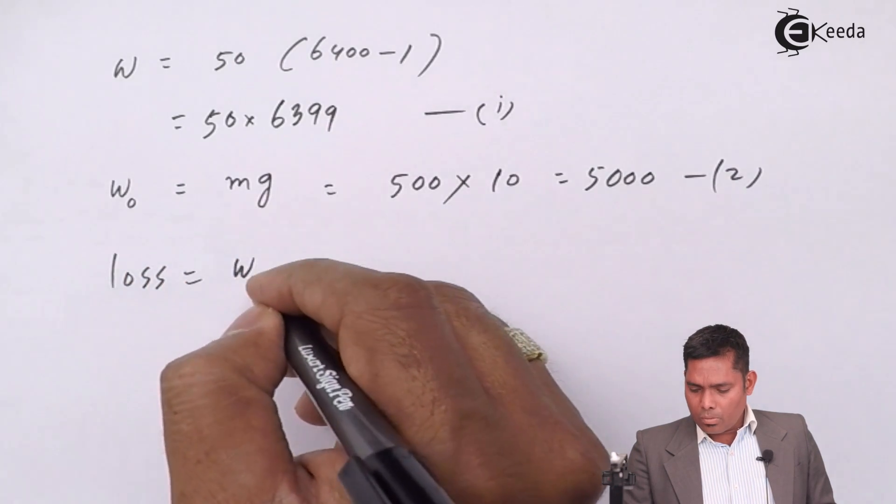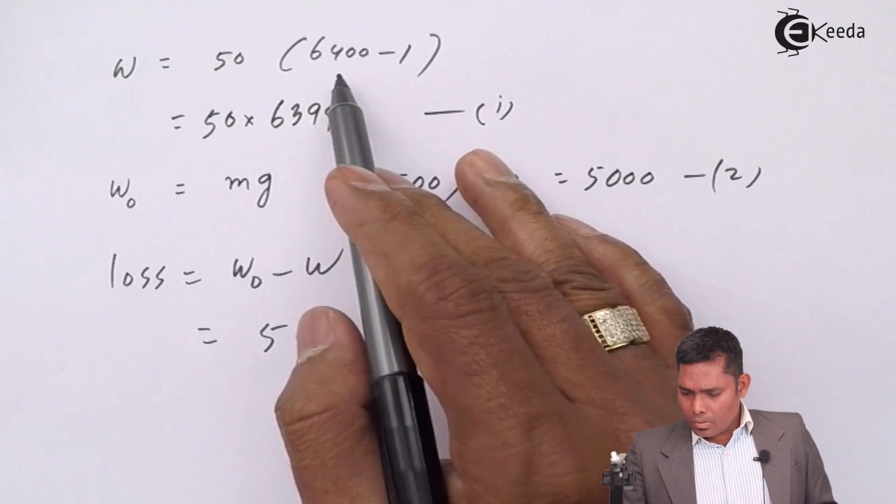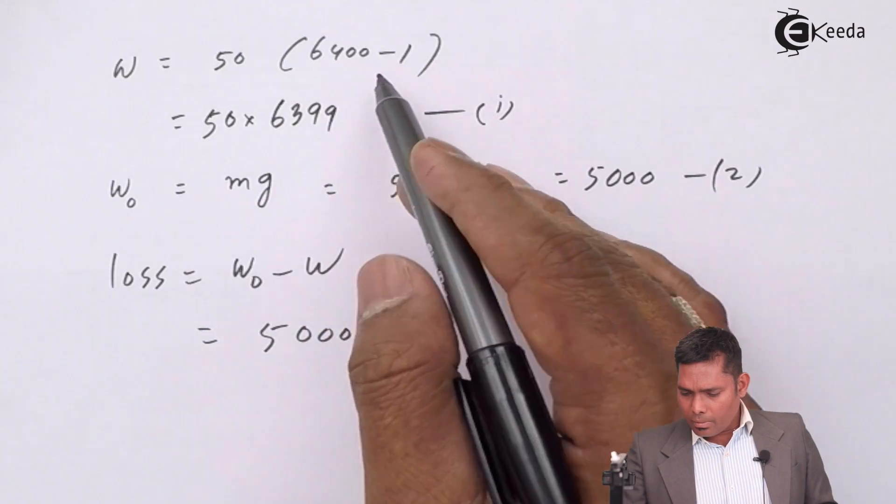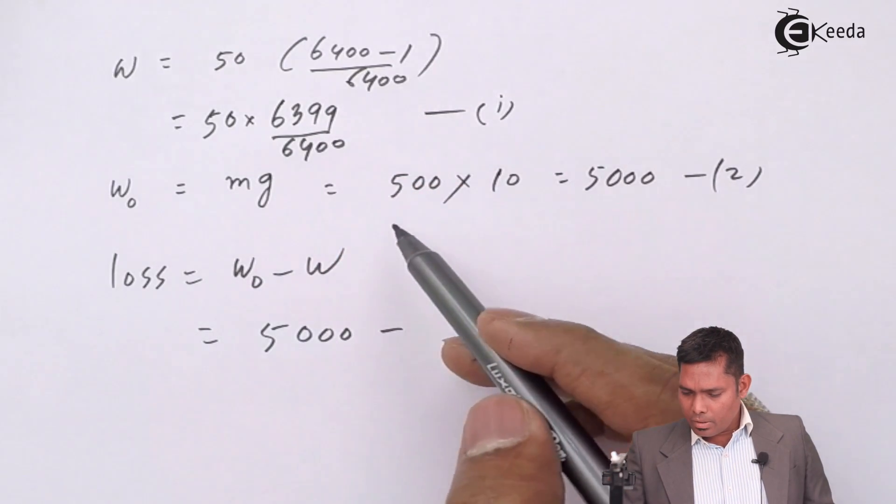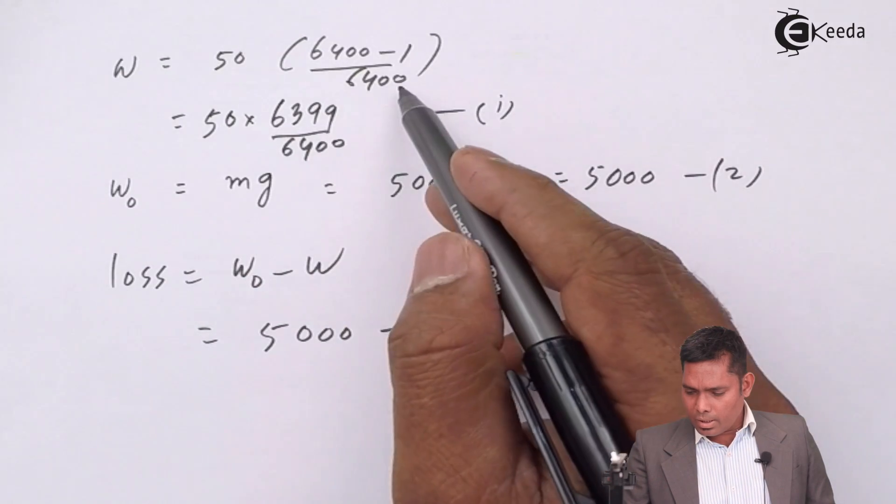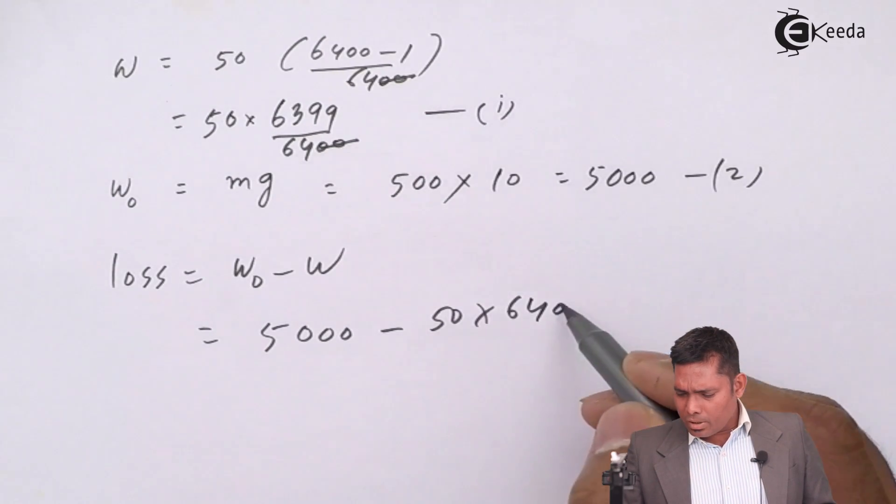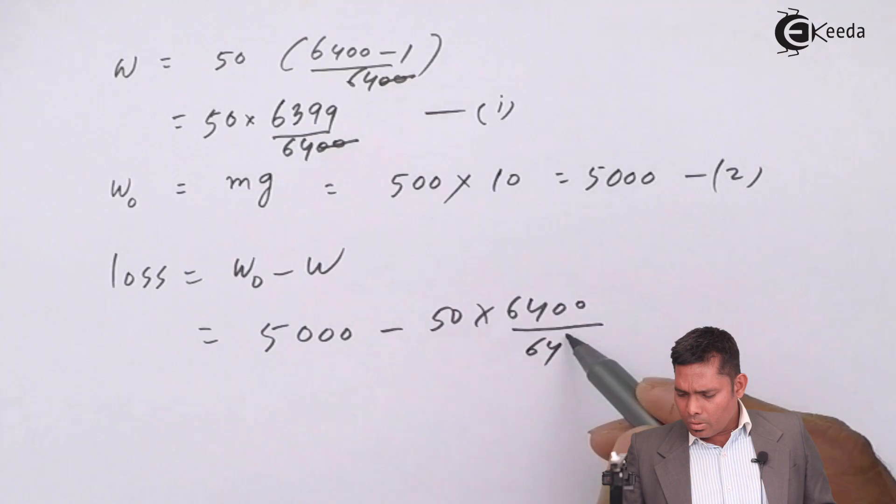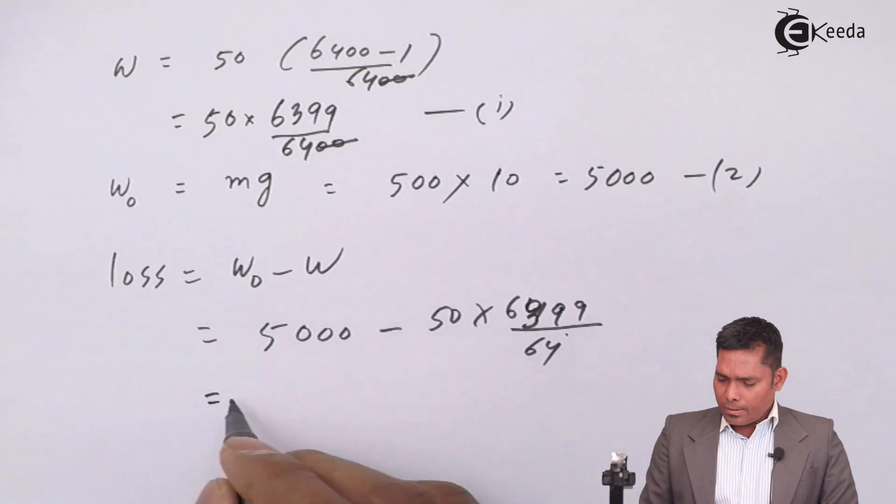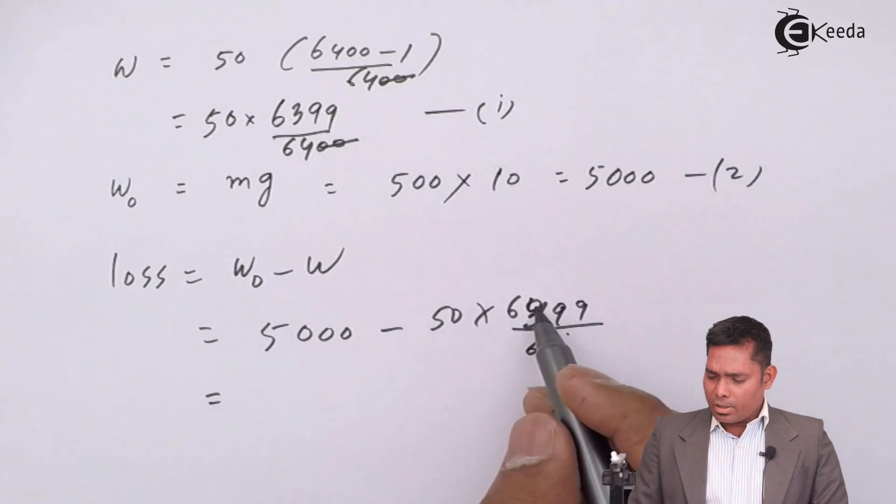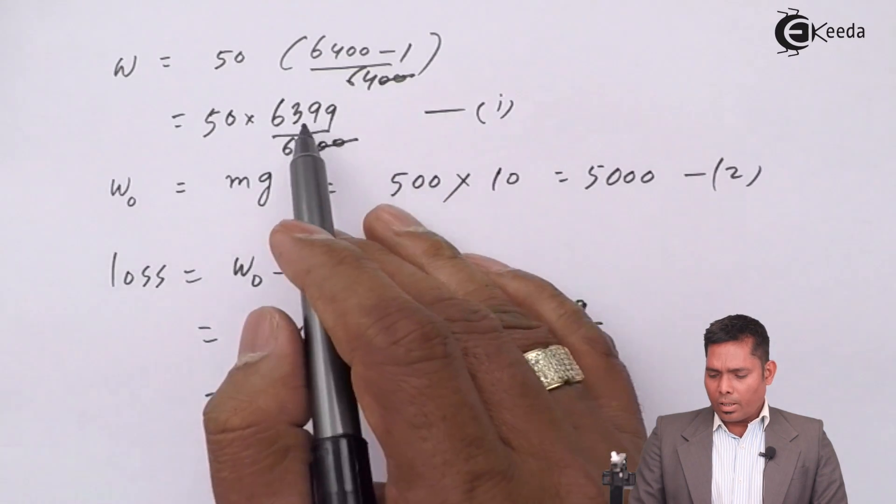Loss is W naught minus W. 5000 minus 64... divided by 64 is there also, 6400, that is also there, that we must not keep in mind. 64 was there, zeros cancel, 64 is there. So 50 into 6, I can approximately take this is 6400 divided by 64, 6399 that I will take. If I solve this, then approximately what I will get. Because if I take this is 6400, then there is no difference comes out. So you have to take the minor difference of 399. So therefore 399 has to be taken.